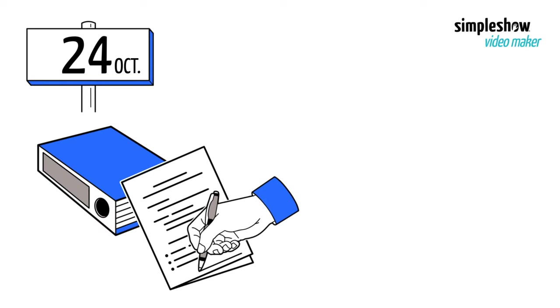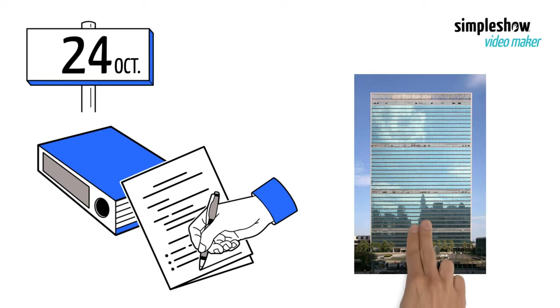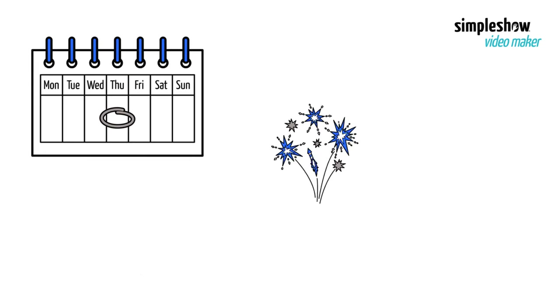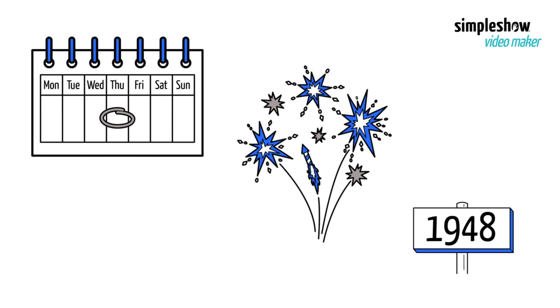On 24 October 1945, the UN Charter was ratified, leading to the official establishment of the UN. This day was first celebrated in 1948.